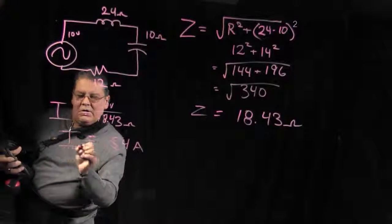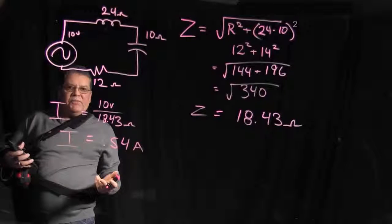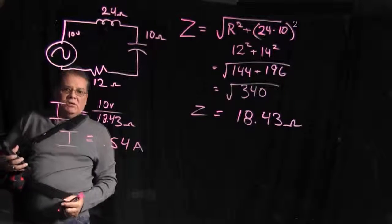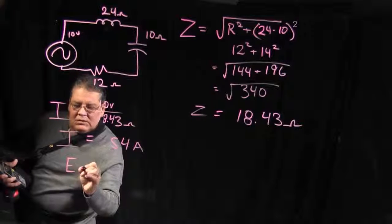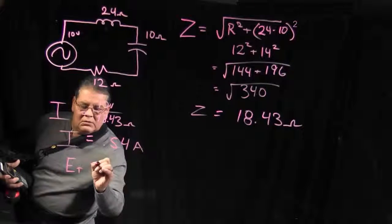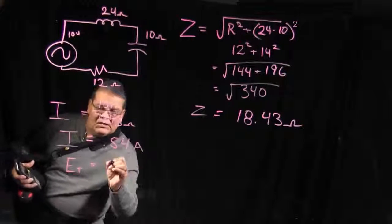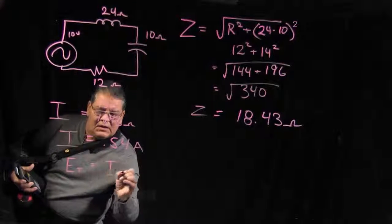So that would be your current. Now you could do the same thing if you were looking for your total voltage. E total would equal, E is equal to I times, in this case Z for impedance.